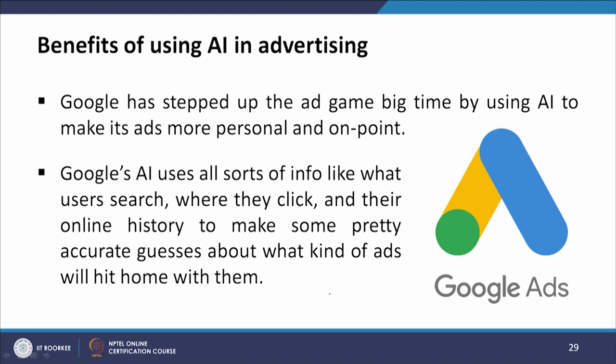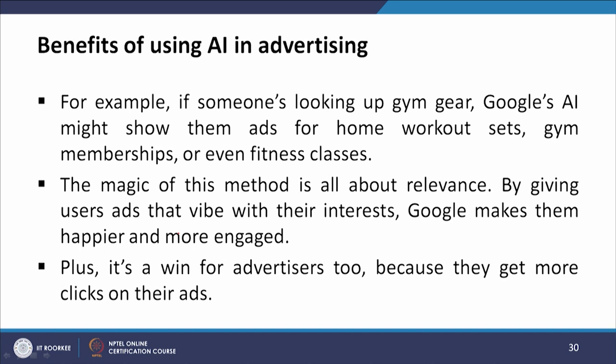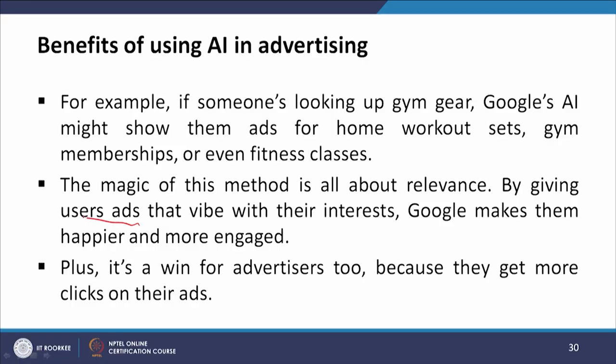The cost per click rate for Molson's weather-specific ads was 67 percent lower than generic ads, and weather-relevant advertising did a better job of persuading people to spread the brand's message — people were 93 percent more likely to share a post when it spoke to how hot it was outside. Google has also stepped up its ad game using AI to make ads more personal and on point. Google's AI uses information like what users search, where they click, and their online history to make accurate guesses about what ads will resonate. For example, if someone is looking up gym gear, Google AI might show ads for home workout sets, gym memberships, and fitness classes — giving users ads that vibe with their interests and driving more clicks for advertisers.